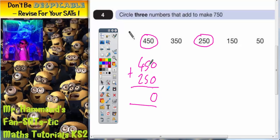0 plus 0 is 0. 5 plus 5 is 10, carry the 1. 4 plus 2 is 6, plus the 1 is 7. So that makes 700.